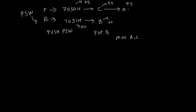We use the instruction MOV A, C. Now the accumulator has become 75. Then we will take the complement of the accumulator using the instruction CMA, and the accumulator will become 8A. So ultimately we got 8A in the accumulator.